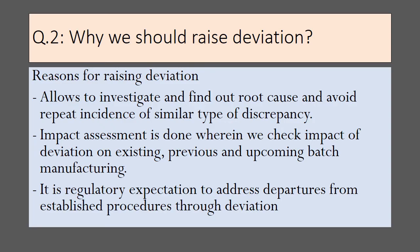Why should we raise deviation? There are many reasons, of which three are highlighted here. Raising deviation allows us to investigate and find out the root cause and avoid repeat incidents of a similar type of discrepancy. Deviation investigation allows impact assessment to be done, wherein we check the impact of deviation on existing, previous, and upcoming batch manufacturing. Deviation raising is also a regulatory expectation — regulators expect that we should address departure from established procedures through deviation.